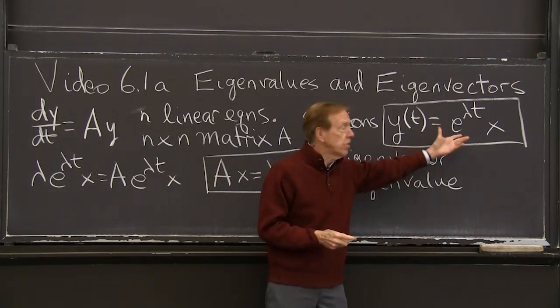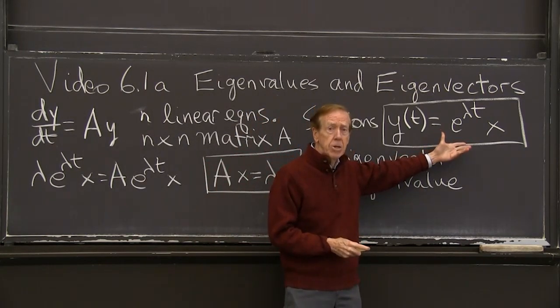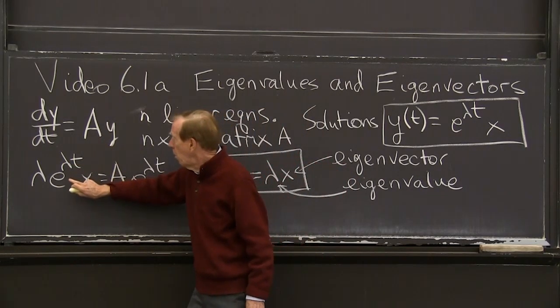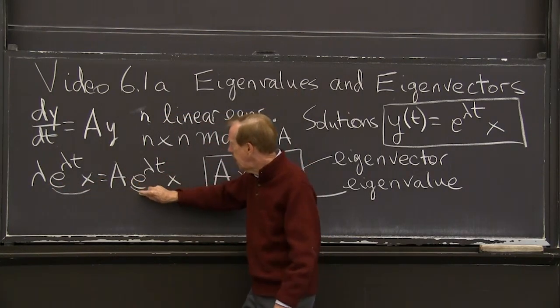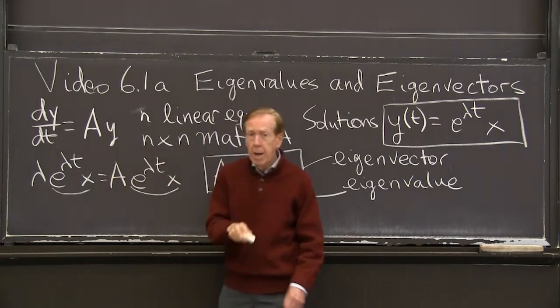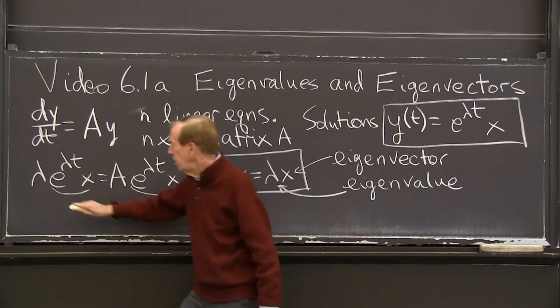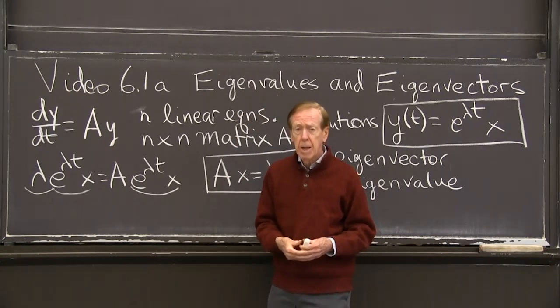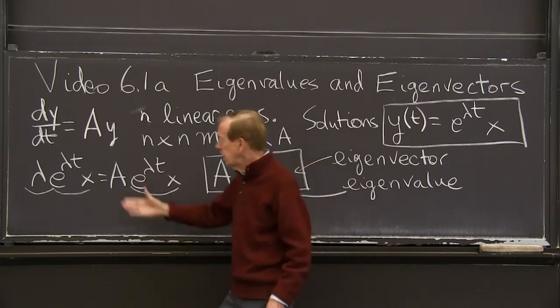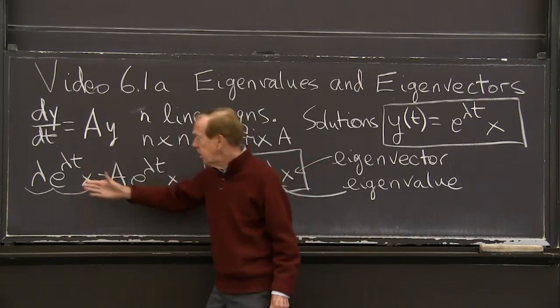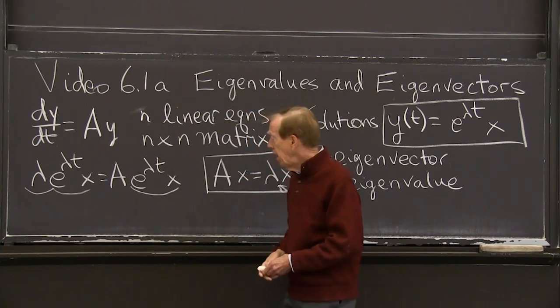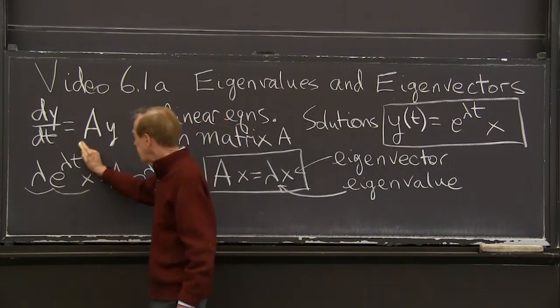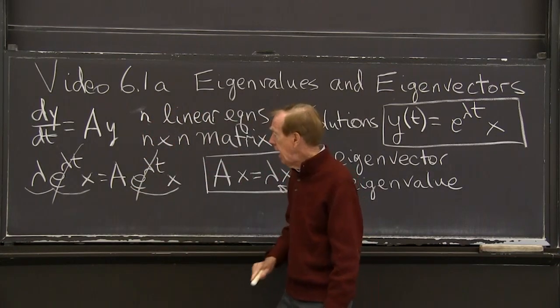OK. So I look for solutions like that. I plug that into the differential equation. And what happens? So here's my equation. I'm plugging in e to the lambda tx. That's y. That's A times y there. Now the derivative of y, the time derivative, brings down a lambda. So to get the derivative, I include the lambda. So substituting into the equation with this nice notation is just this has to be true. My equation changed to that form.